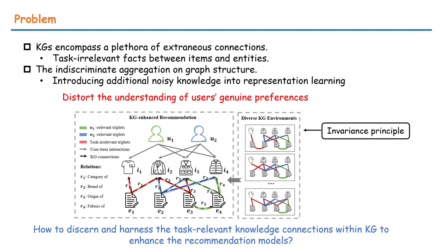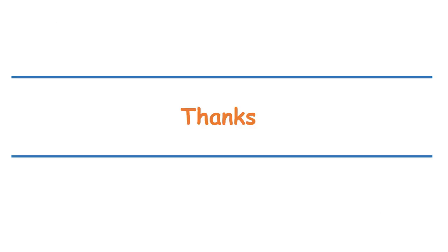thereby sacrificing the recommendation quality. To address these limitations, in this paper we introduce the principle of invariance to knowledge-aware recommendation, culminating in our Knowledge Graph Invariant Learning (KGIL) framework. It aims to discern and harness the task-relevant knowledge connections within the KG to enhance the recommendation models.